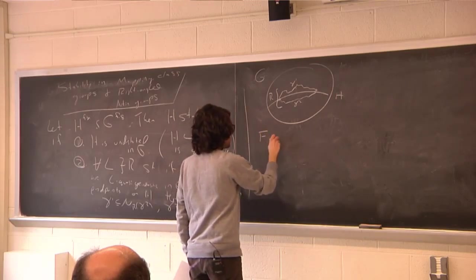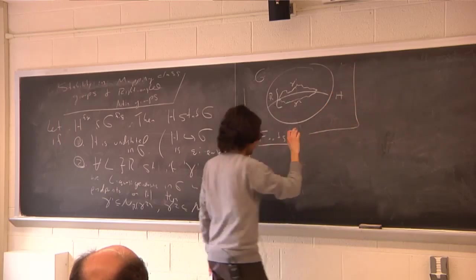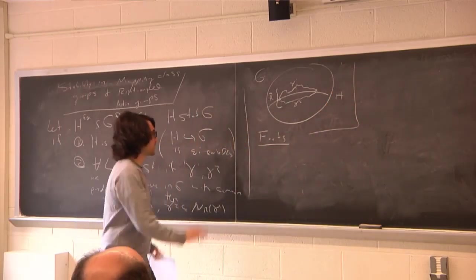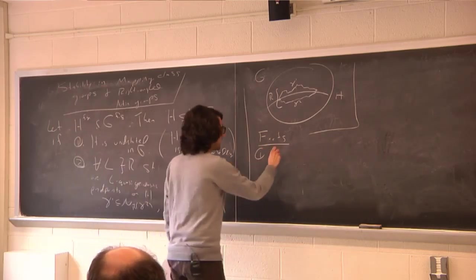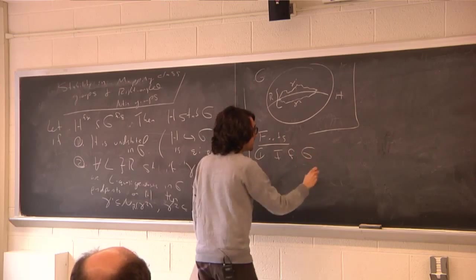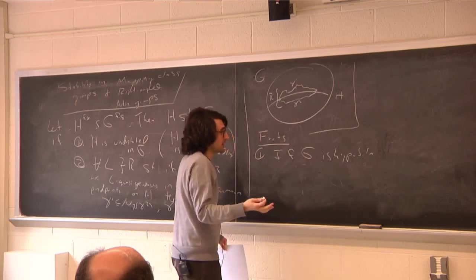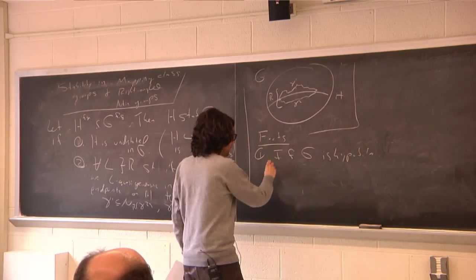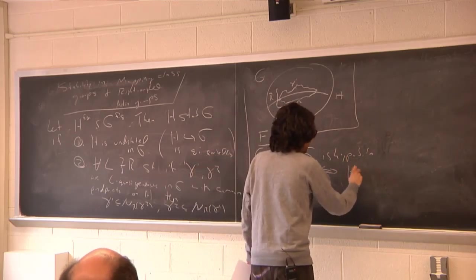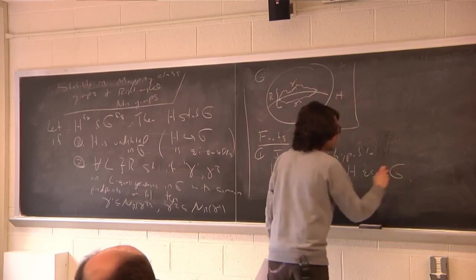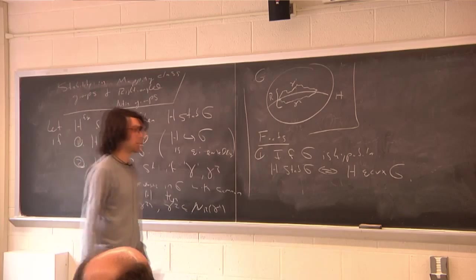Here are some basic facts directly from the definition. Fact one: if G is hyperbolic, then I haven't done anything new — this is exactly the notion of quasi-convexity. H is stable in G if and only if H is quasi-convex in G. So if G itself is hyperbolic, stability is the same as quasi-convexity, which is what we wanted.